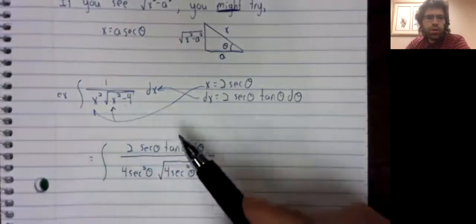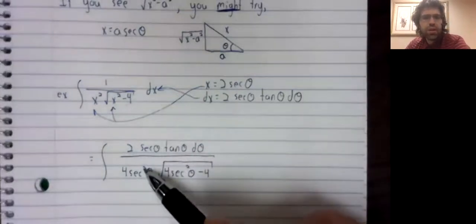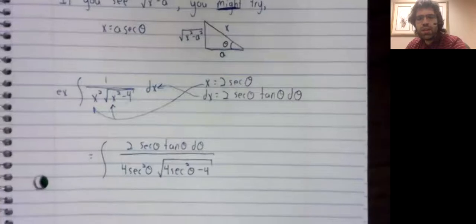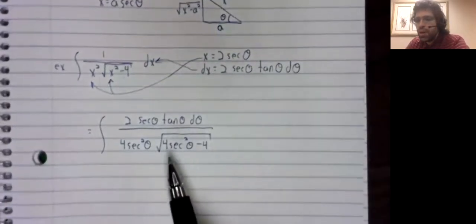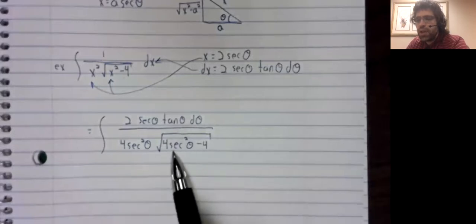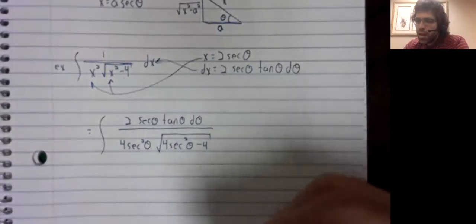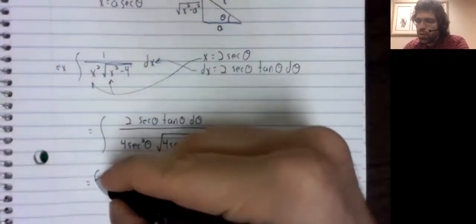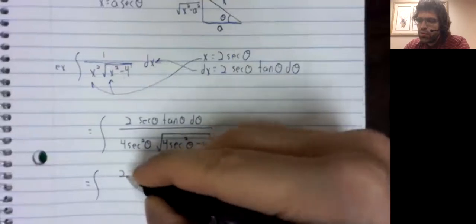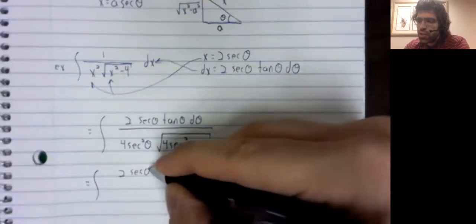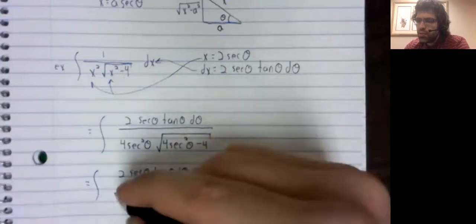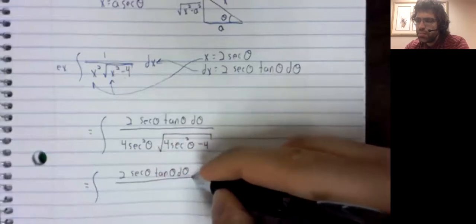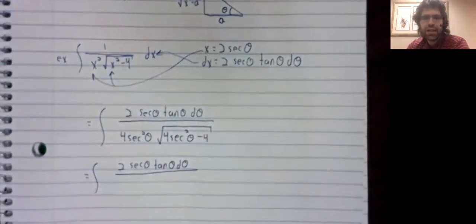We could cross off this secant and one of the secant down here. We probably will do that eventually. But for now, let's try to cope with this square root. I've said before that when you do trig substitution, you expect to see the Pythagorean identity.